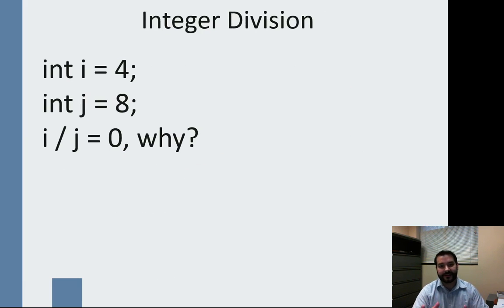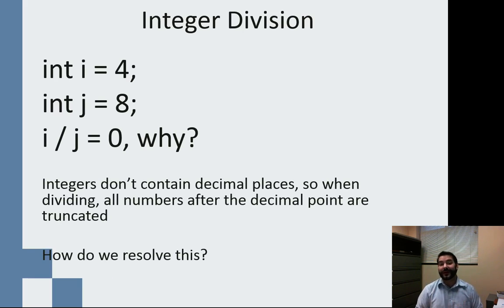So int i equals 4, int j equals 8. i divided by j equals 0. Why? That should be 0.5. What's going on is we have something known as integer division. I said earlier that integers are whole numbers, meaning they don't have decimal places. So when you do something like division, they don't hold decimal values. So how do we fix that? What we want to do is change them from being int i to double i and int j to double j. Then all of a sudden when we do i divided by j, it'll be 0.5.